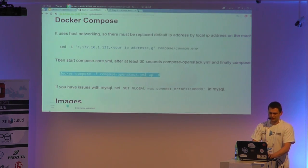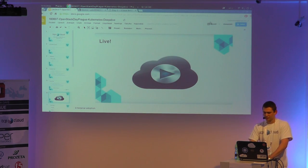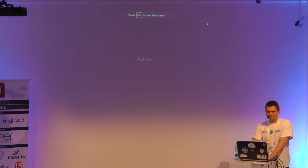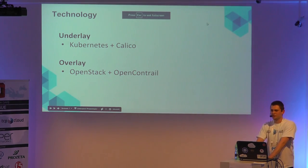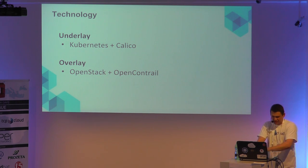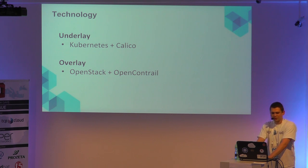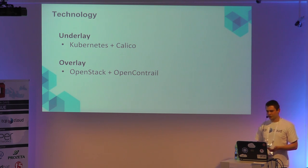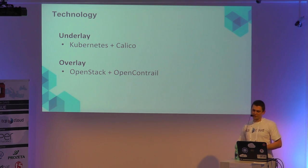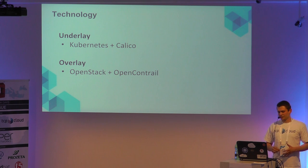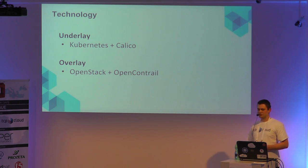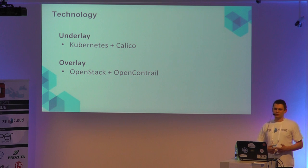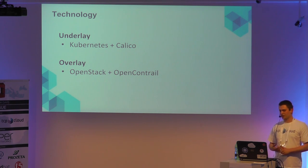That was the first part and I will be back to my presentation. I would like to continue with the high availability stuff. The first slide is about the technology we use to get it all working. I use the term 'underlying' not just for networking, but for the whole infrastructure that OpenStack runs on — meaning the Kubernetes cluster together with Calico for networking.